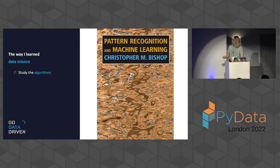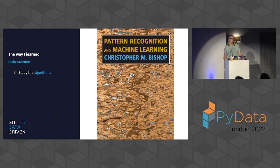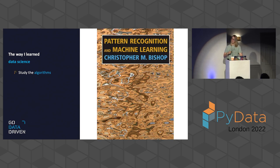The first thing we did during our machine learning course was study the book by Bishop — Pattern Recognition and Machine Learning. It's very heavy on maths and equations. It gives you a great deep understanding of the underlying math behind all the algorithms, but it's not necessarily very practical.